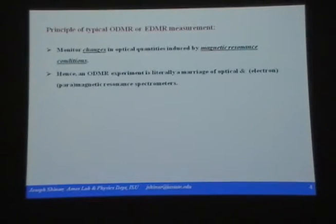So that's ESR in a nutshell. What happens in a typical optically or electrically detected magnetic resonance measurement? We still expose the sample to the same conditions as in an ESR experiment — microwave photons and a DC scanned magnetic field — but we don't detect changes in absorption of microwave energy. We detect changes in an optical quantity. That's why it's called optically detected. An ODMR experiment is literally a marriage of optical and electron paramagnetic resonance spectrometers.